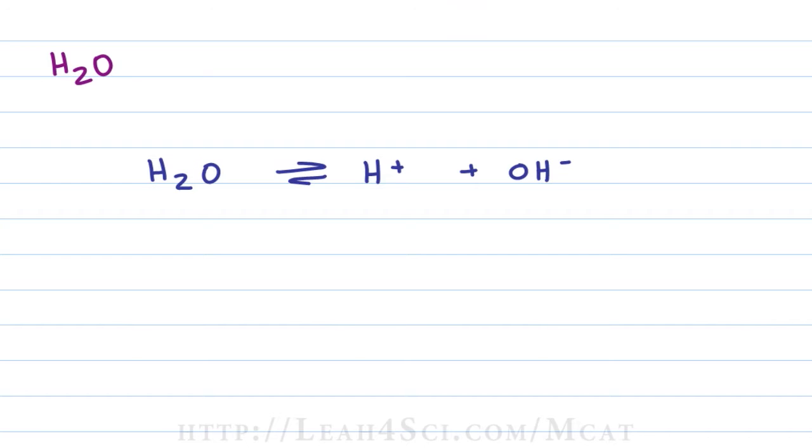Now think about your acid-base definitions. An acid is something that will donate an H+ in solution, well we have that right here. The Arrhenius base is something that will donate an OH- in solution, or the Bronsted-Lowry base is something that's negative or partially negative that can pick up an H+ in solution.